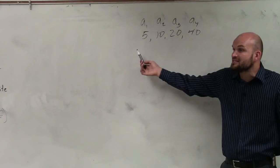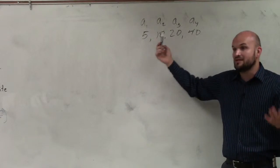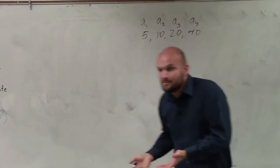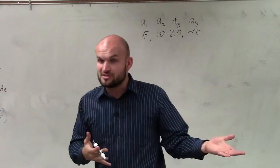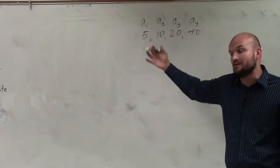And if the differences are the same, 10 minus 5 is 5, 20 minus 10 is 10. But if those differences were exactly the same, therefore, then you could say it's an arithmetic sequence. And what we do is we just subtract those terms to find d, which is our difference.